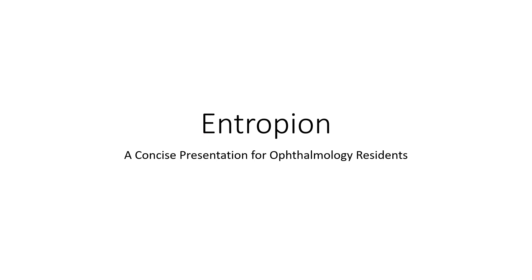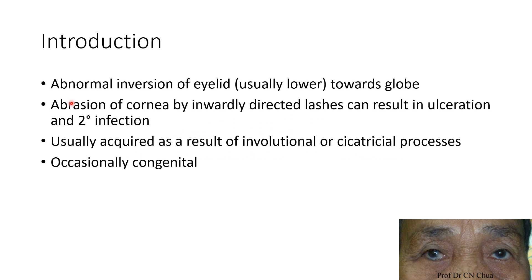Hello guys, this is Indian Medico and in this video we are going to discuss about entropion. Entropion is abnormal inversion of eyelid, usually lower eyelid, towards the globe. It can lead to abrasion of cornea by inwardly directed lashes which can result in ulceration and secondary infection. Entropion is usually acquired as a result of involutional or cicatricial processes. This picture shows a case of entropion.